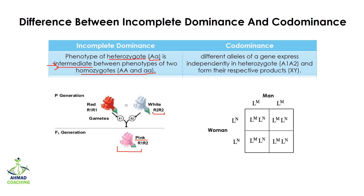In case of co-dominance, different alleles of a gene express independently in the heterozygote. They are not interfering with each other but are independent. This means allele A1 is going to express independently and allele A2 is going to express independently, and they are going to produce their respective products X and Y.